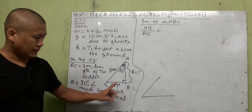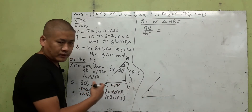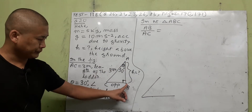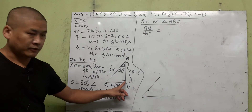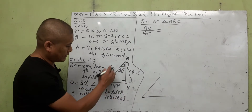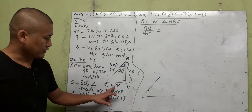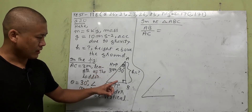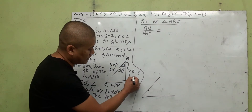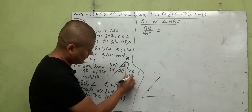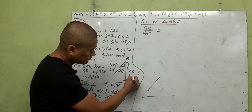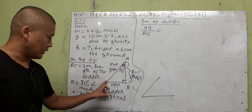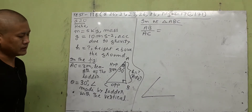The 90-degree angle at B has two arms: BA and BC. The side not forming this right angle is AC, which is called the hypotenuse. So in this triangle, BC is the opposite side, AC is the hypotenuse, and AB is the adjacent side with respect to the angle theta of 30 degrees.